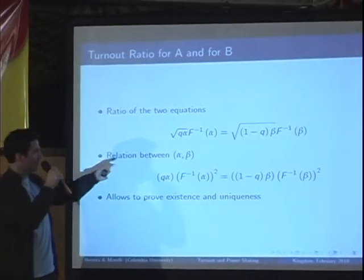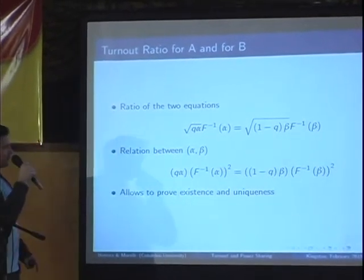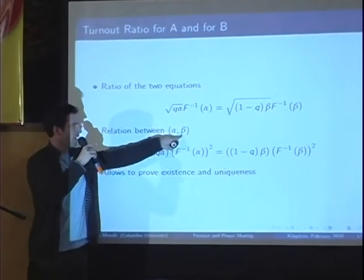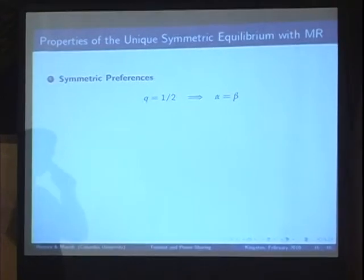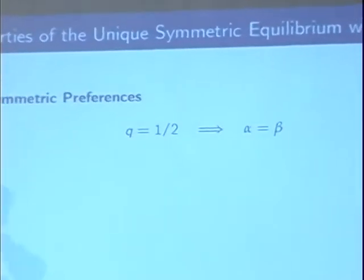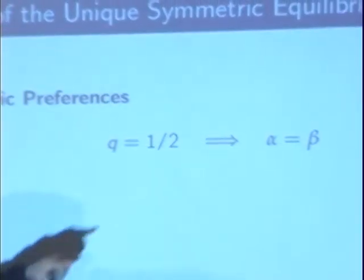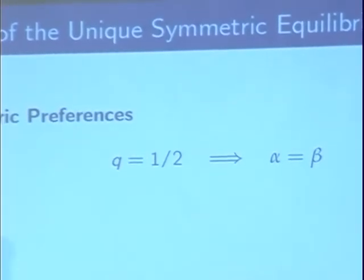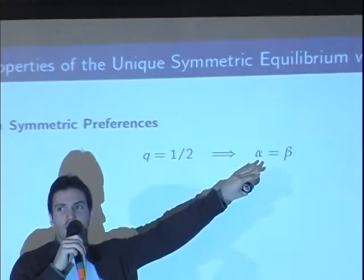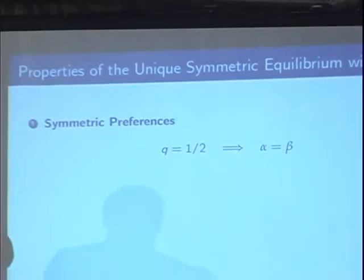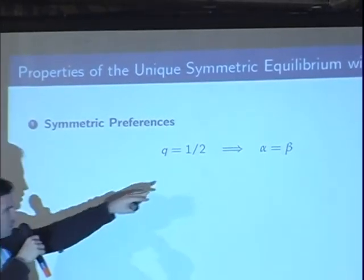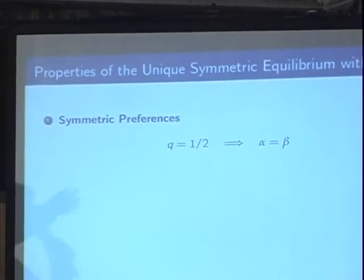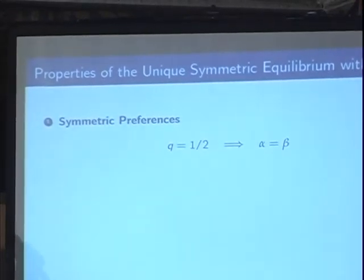There's a relationship between the turnout alpha for party A and the turnout beta for party B. If we have a symmetric election, not surprisingly, the turnout for each party is the same when costs come from the same distribution — there's no asymmetry. So it's symmetric ex-ante and symmetric ex-post as well: an ex-ante even election ends up as an ex-post even election.